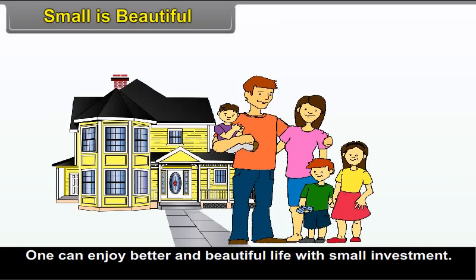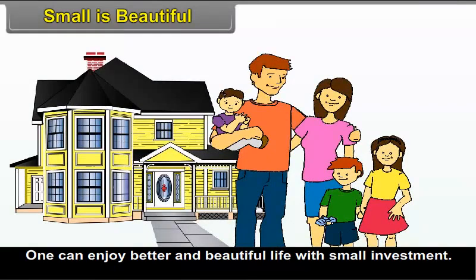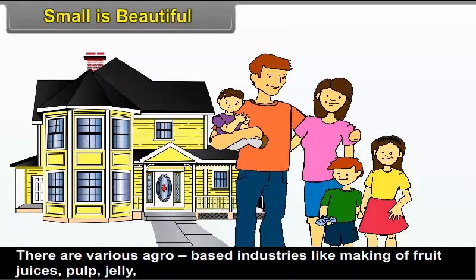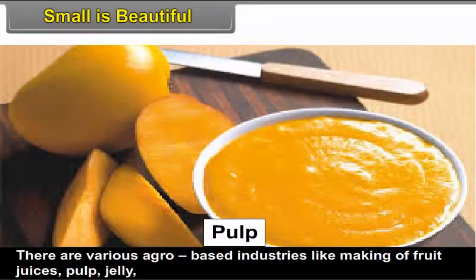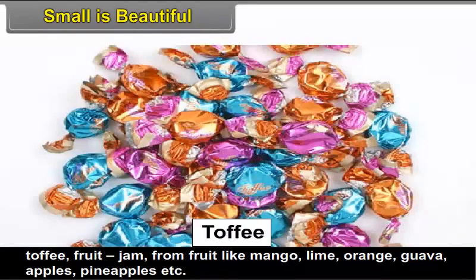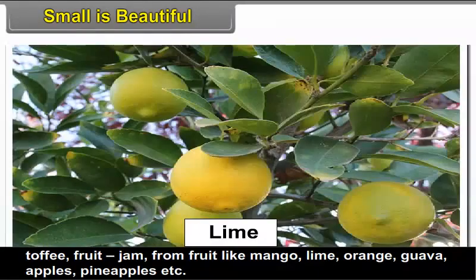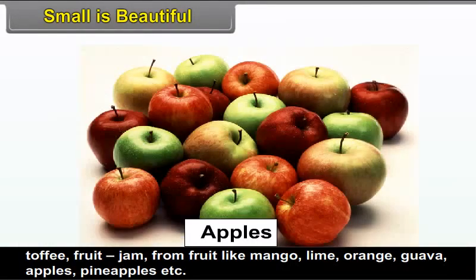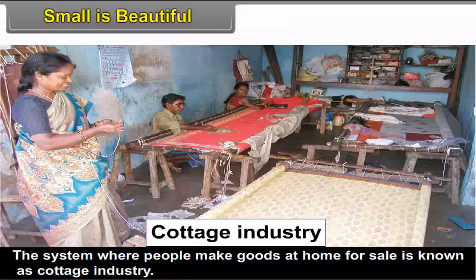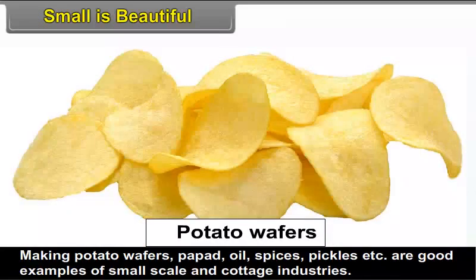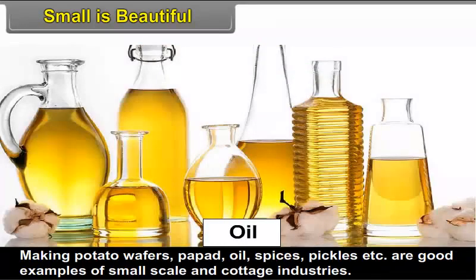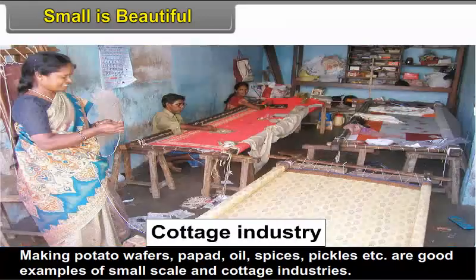Small is beautiful. One can enjoy a better and beautiful life with small investment. There are various agro-based industries like making fruit juices, pulp, jelly, toffee, fruit jam from fruits like mango, lime, orange, guava, apples, pineapples, etc. The system where people make goods at home for sale is called cottage industry. Making potato wafers, papad, oil, spices, pickles, etc. are good examples of small scale and cottage industries.